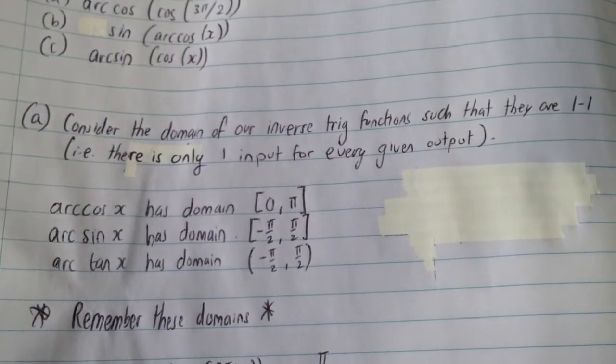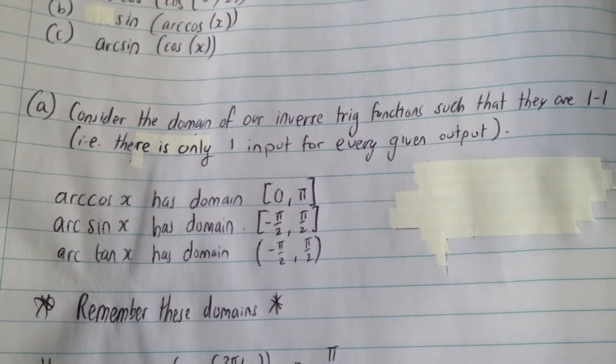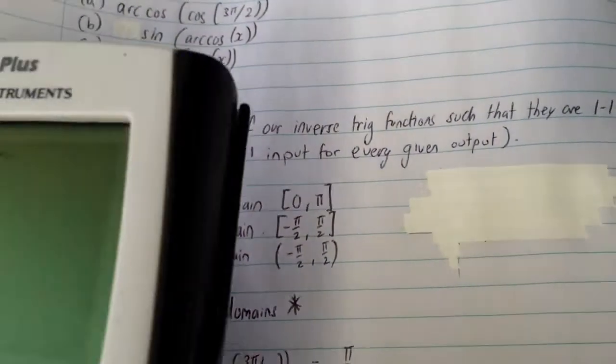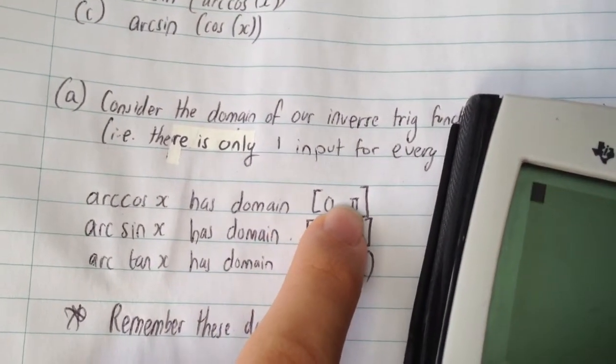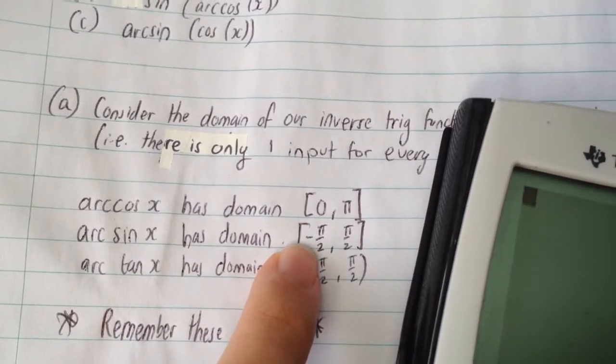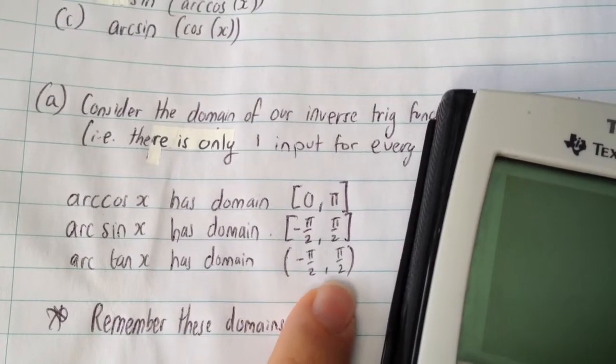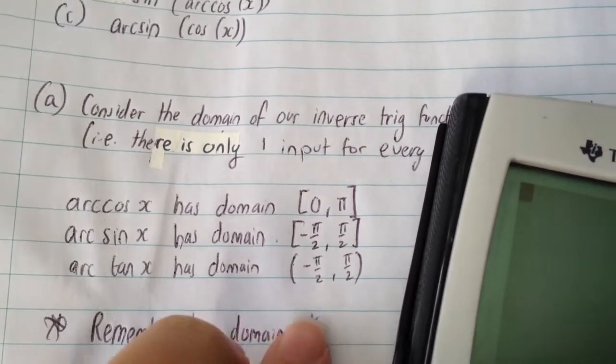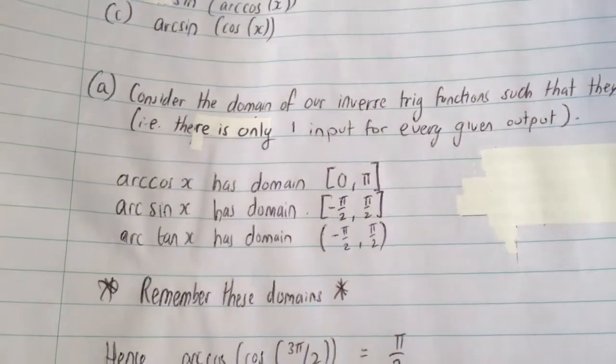And that's because we need these functions to be one to one. That is, we want only one input for every given output. So, as such, arccos(x) has a domain of 0 to π. Arcsin(x) is -π/2 to π/2. Both of these are inclusive. Arctan(x) has domain -π/2 to π/2 exclusive between those values. And it's really important that we remember these domains.